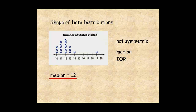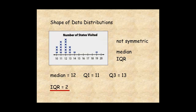The first quartile is 11. The third quartile is 13. And the interquartile range is 13 minus 11, or 2. So the data are centered around 12 states. The spread of the data around the center is about 2 states, so most students visited between 11 and 13 states.